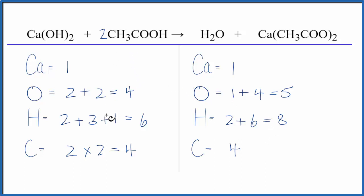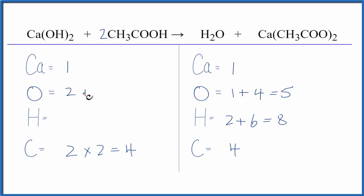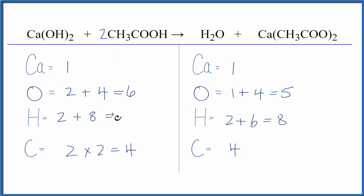Then we need to update the hydrogens and the oxygens. For the oxygens, I have two times the one — that's two — plus two here times two, so two times two is four. That gives six oxygen atoms. Hydrogens: I have two times the one, two, plus the three, four — so four times two, that's eight — giving me ten total hydrogens. So at this point the oxygens and the hydrogens are off. Everything else is balanced.